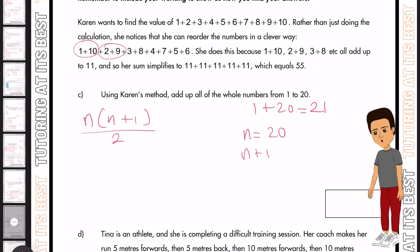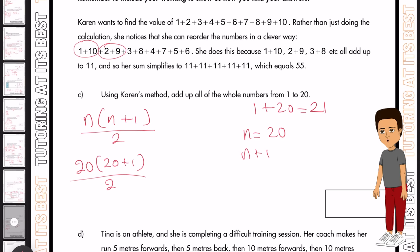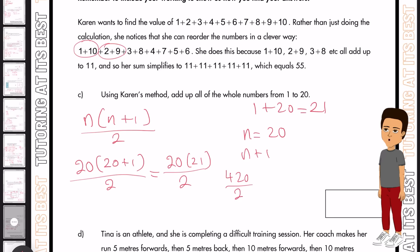So remember here now, we're going to plug in the numbers. We have 20, 20 plus 1, divided by 2, which would then give us 20 multiplied by 21, divided by 2. And so what does that give us? Well, we know 20 times 21 is 420, divided by 2, gives us 210. And that is our answer. And that is a shortcut to working out Karen's method.